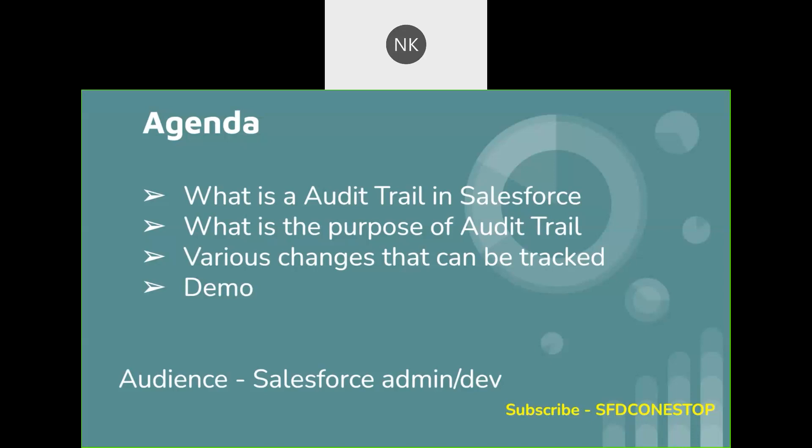The Setup Audit Trail history shows around 20 recent changes that were done to your organization. If you want to download the Setup Audit Trail for the past 180 days, you can do that as well. All the changes made to the organization over the past 180 days will be captured in the downloaded Setup Audit Trail history.